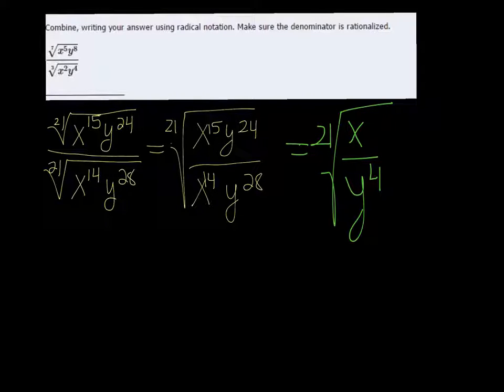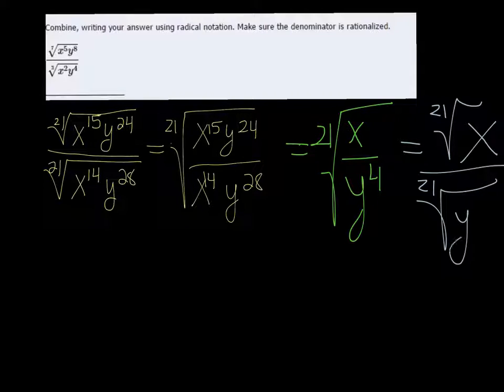Well, that would be good except that we have a radical on the bottom. So we want to split it up. We have the 21st root of x over the 21st root of y to the 4th.